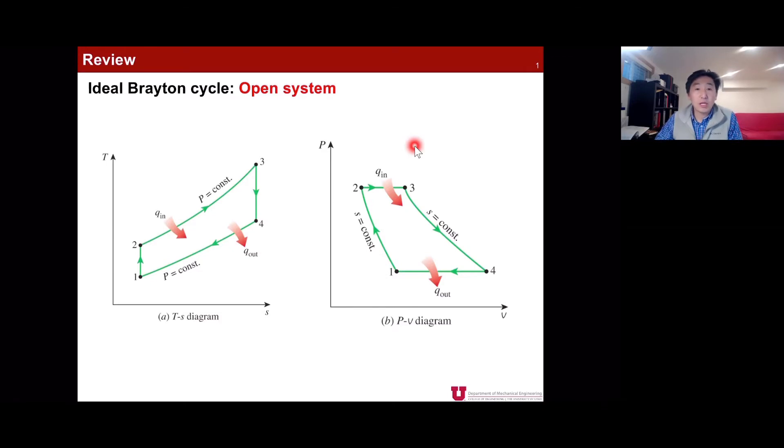What you have to really remember is that in order to do the ideal Brayton cycle analysis, or in general gas turbine analysis, we have to assume that each component is an open system. And now we try to draw the TS diagram.